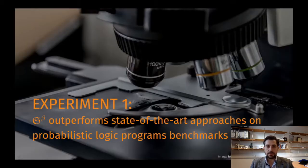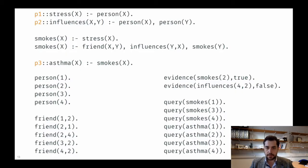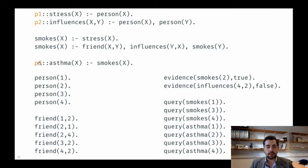We experimentally validated our proposal. The first experiment shows our proposal outperforms state-of-the-art approaches on probabilistic logic program benchmarks. We considered the traditional smoke-and-friends benchmark: a person has a certain probability of being stressed, persons x and y may influence each other with some probability, a stressed person smokes by definition, and if x and y are friends and y influences x and y smokes, then x also smokes. Smoking implies asthma with a certain probability. We have four people, some of them friends, with evidence about who smokes and who influences whom.